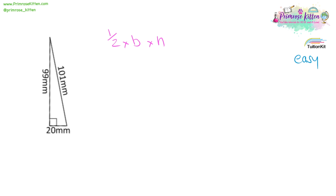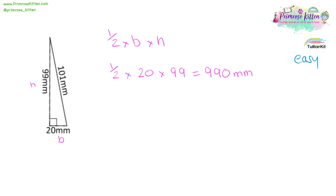A half times base times height — our base, our height. A half times 20 times 99 equals 990 millimetres squared.